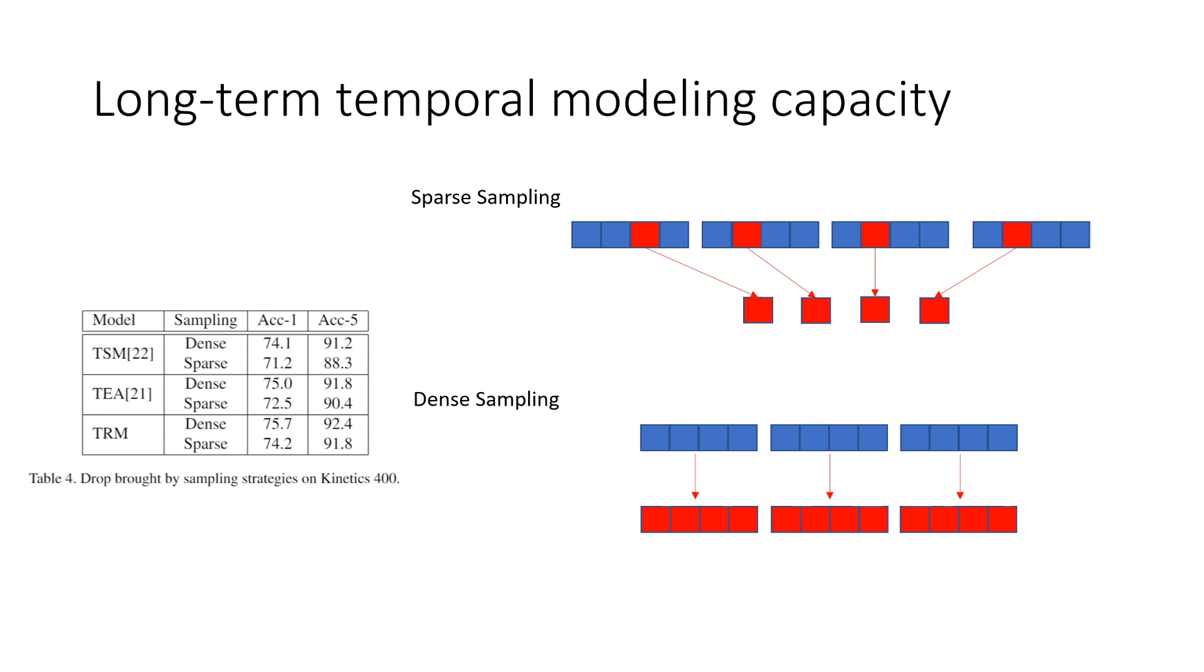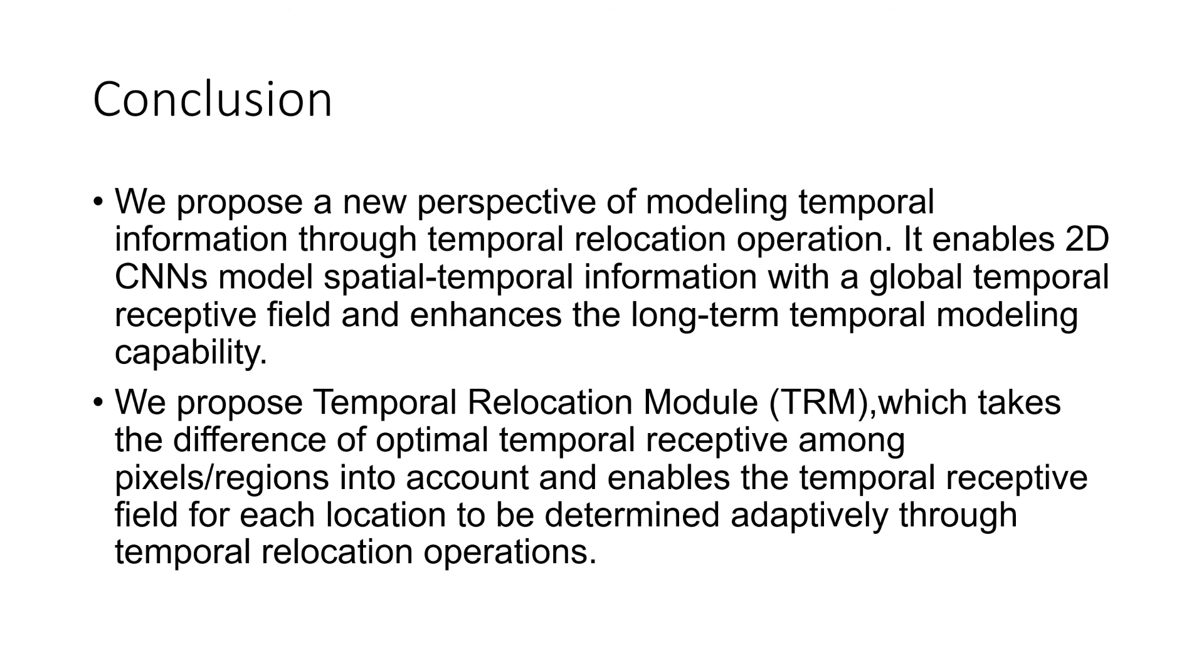So in conclusion, our contribution: we propose a new perspective of modeling temporal information. It enables 2D CNN to model spatial temporal information with a global temporal receptive field and enhance the long-term temporal modeling capability. We also propose a temporal relocation module which takes the difference of optimal temporal receptive field among pixels or regions into account, and enables a temporal receptive field for each location to be determined adaptively through relocation operations. That's all. Thanks for watching.